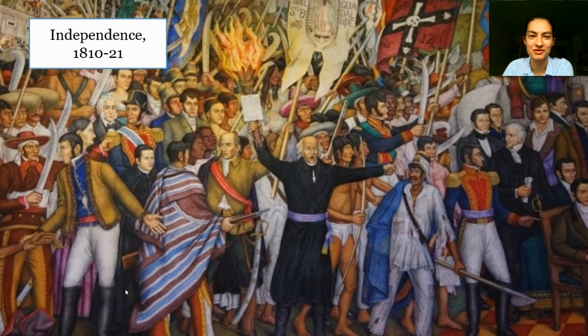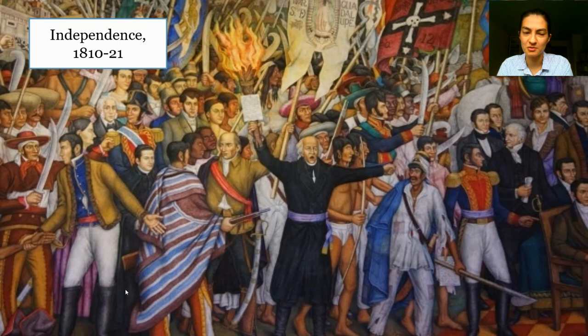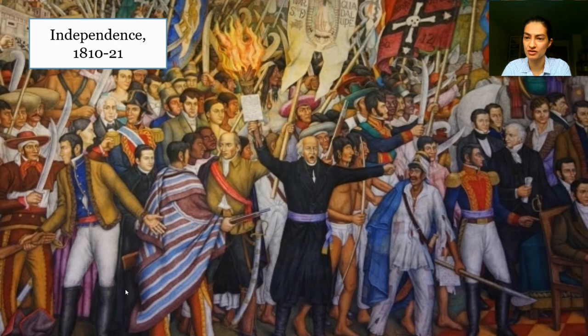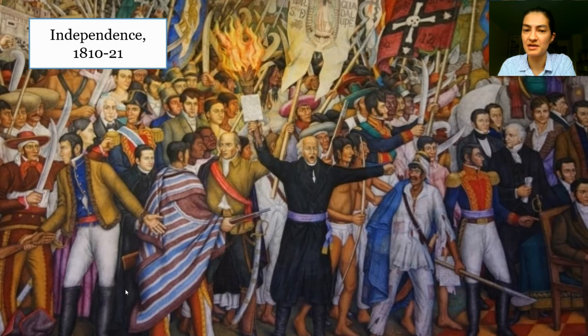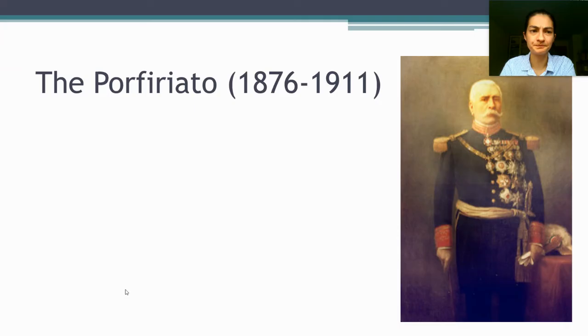Starting in 1810 and lasting through 1821, a complex series of events leads Mexicans to declare and achieve independence from Spain. The crucial point for our purposes is that the Mexican independence movement starts out as a very radical populist movement, then gets co-opted by much more conservative members of Mexico's elite, who are actually really interested in independence because they want to preserve their economic and social status at the top of a very unequal system.